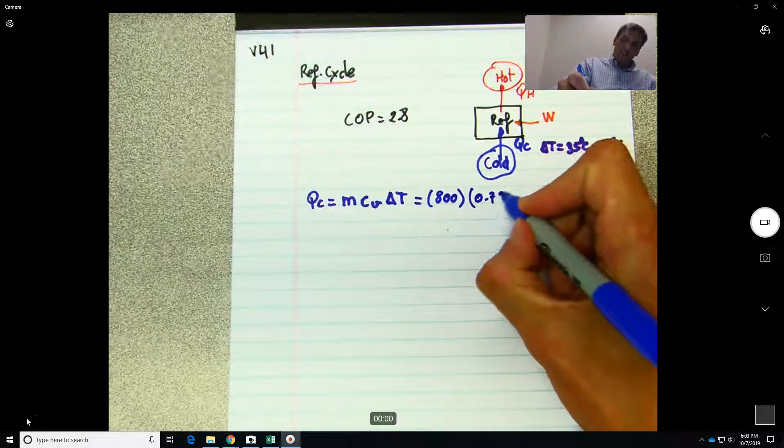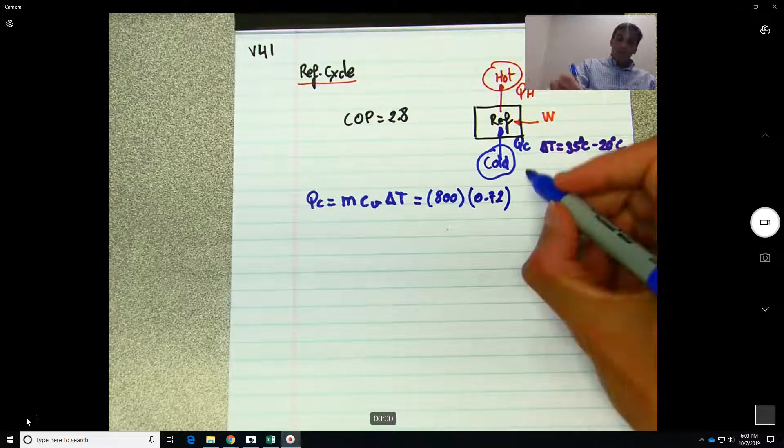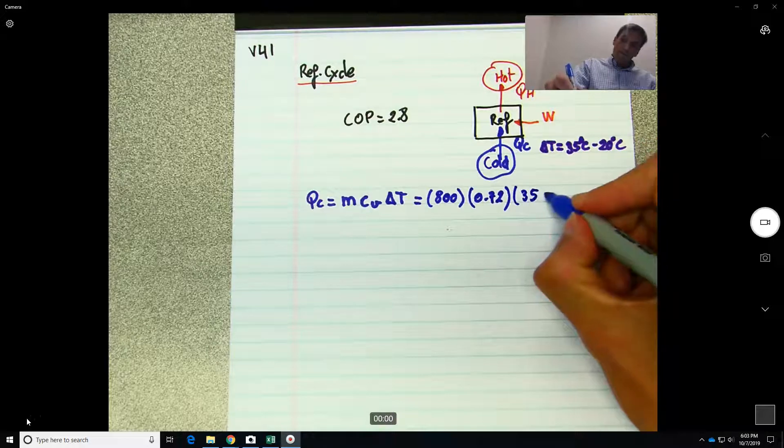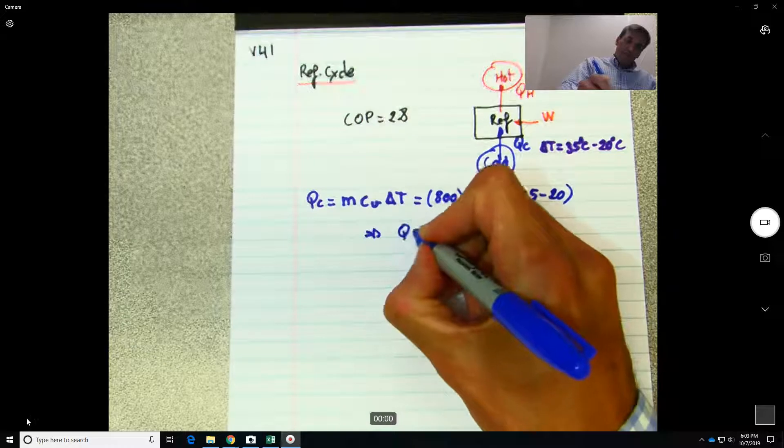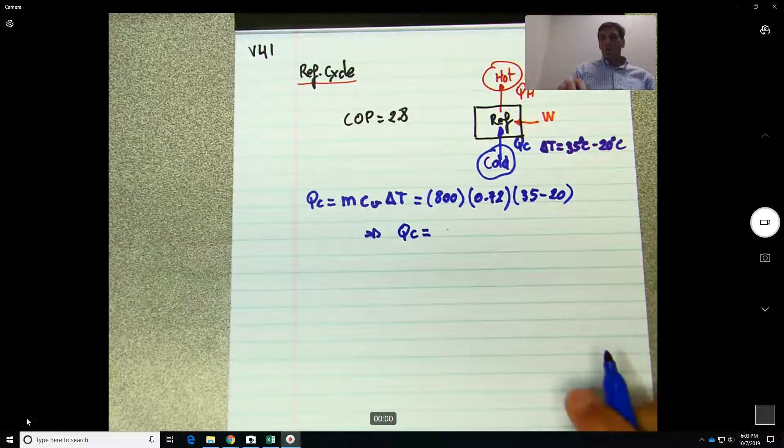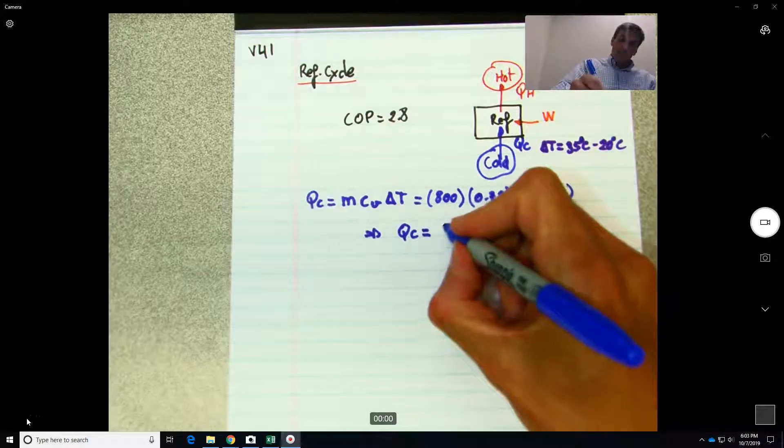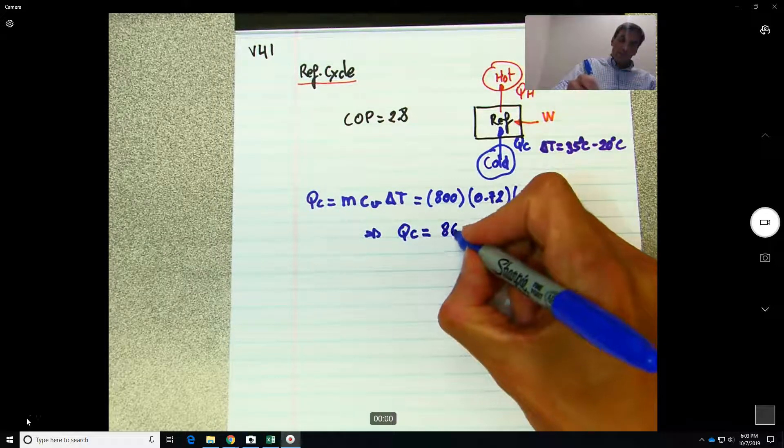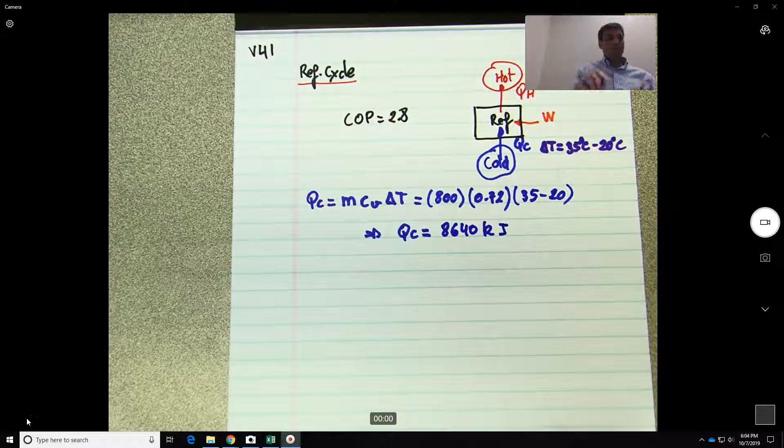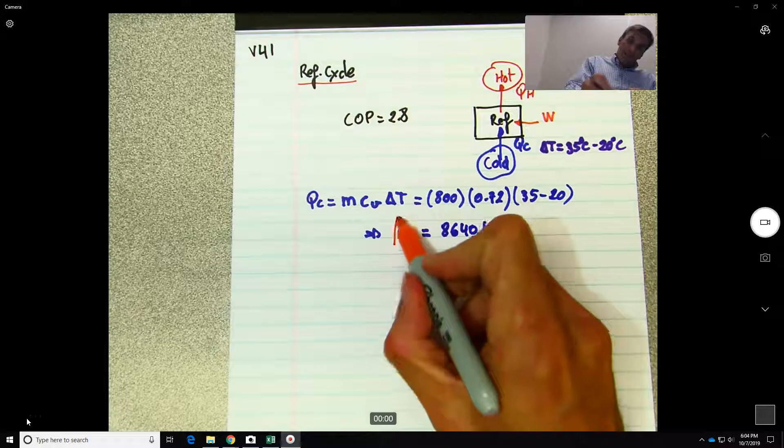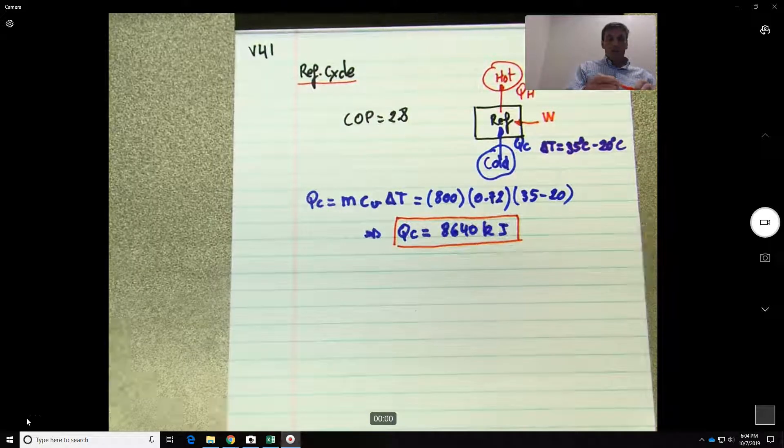And now delta T. So this should be equal to what? 800 kilograms times 0.72 kilojoules per kilogram Kelvin times (35 minus 20). If you do this calculation, the amount of cold that needs to be put into the house is 8640 kilojoules. So this is the amount of cold that we need to put into the house.